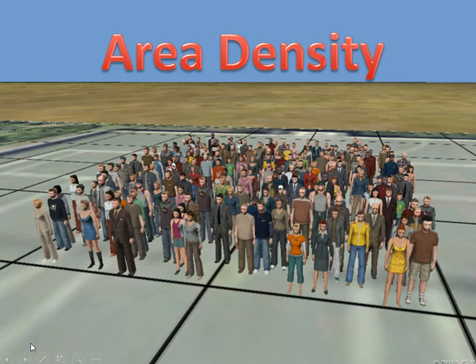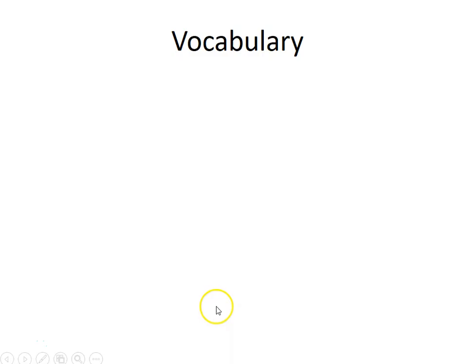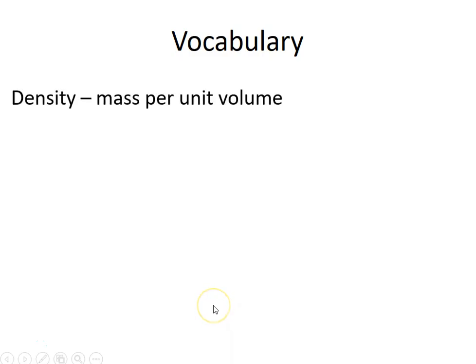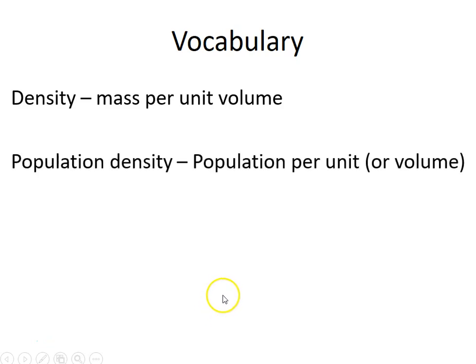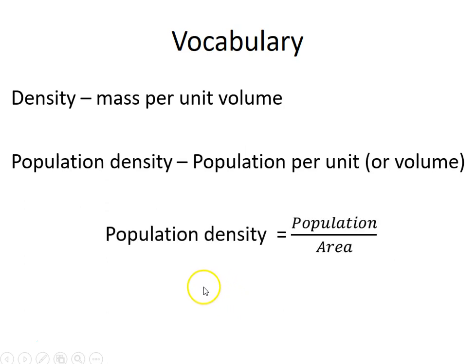Today we're going to talk about area density. This is similar to mass density but different because it has to do with area versus volume. Density is mass per unit of volume, and population density is the population per unit of area. We're going to focus mostly on population density — people or animals over an area. The formula we'll use is: population density equals population divided by area.